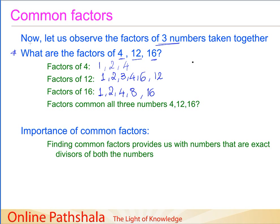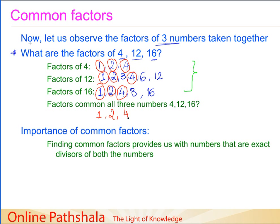Let us try to identify the common factors in these three numbers as we did earlier. We can clearly see that the number 1 is a common factor — and it is interesting to know that 1 will always be a common factor for any numbers you take, because 1 is a factor of every number. The other common factor is 2, which appears in all three. We also see the number 4 appearing in the factors of all three. So the numbers 1, 2, and 4 are the common factors for the numbers 4, 12, and 16.